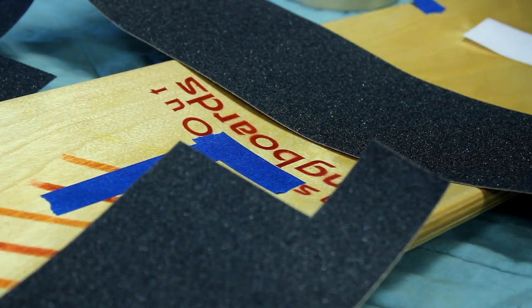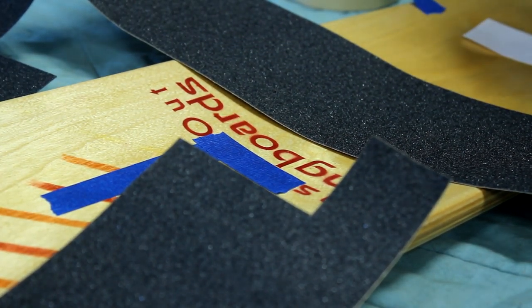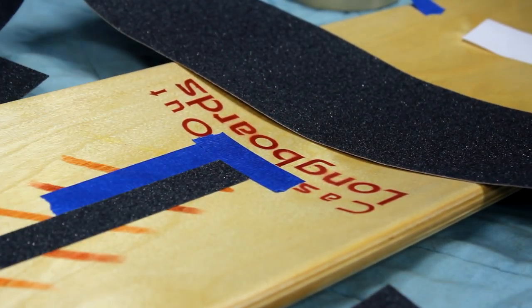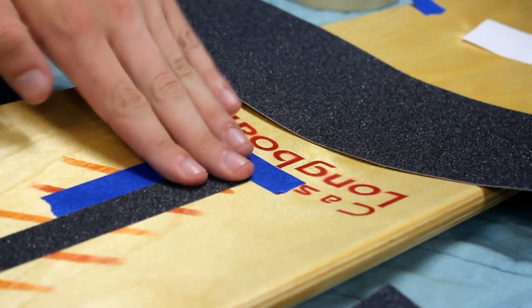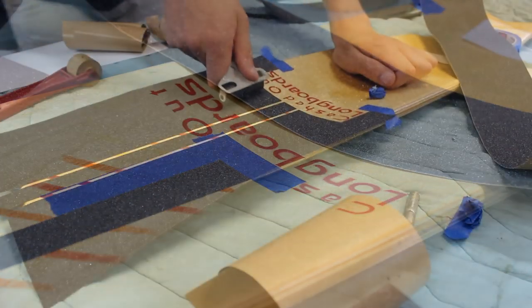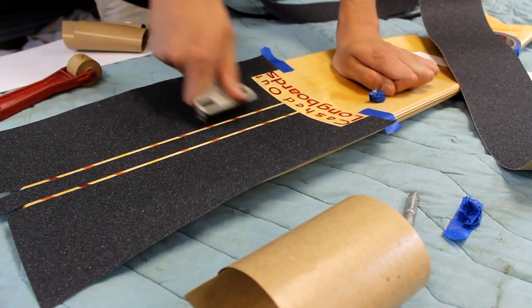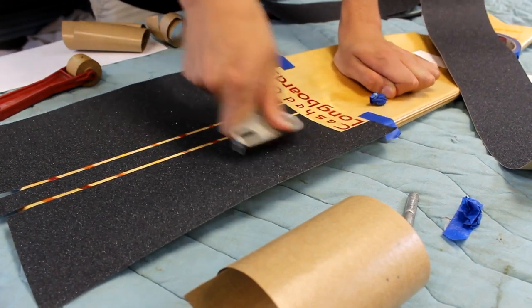Now you can start sticking on your grip tape using tape as guides. It is very important that you are very accurate and precise if you want a good final result. Keep applying pieces of grip tape and use a roller if you have one. If you don't, make sure they are thoroughly stuck on with your hands.